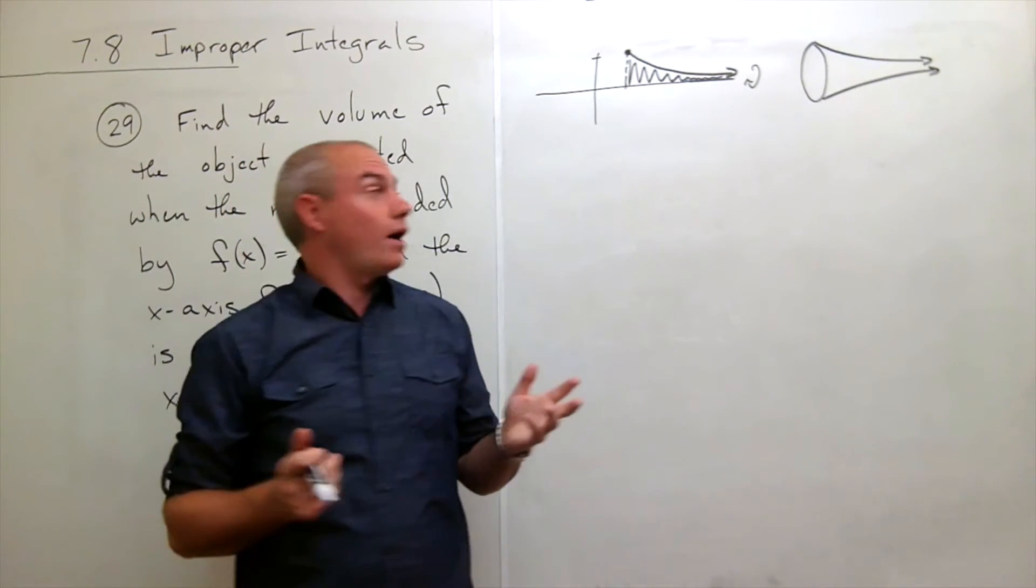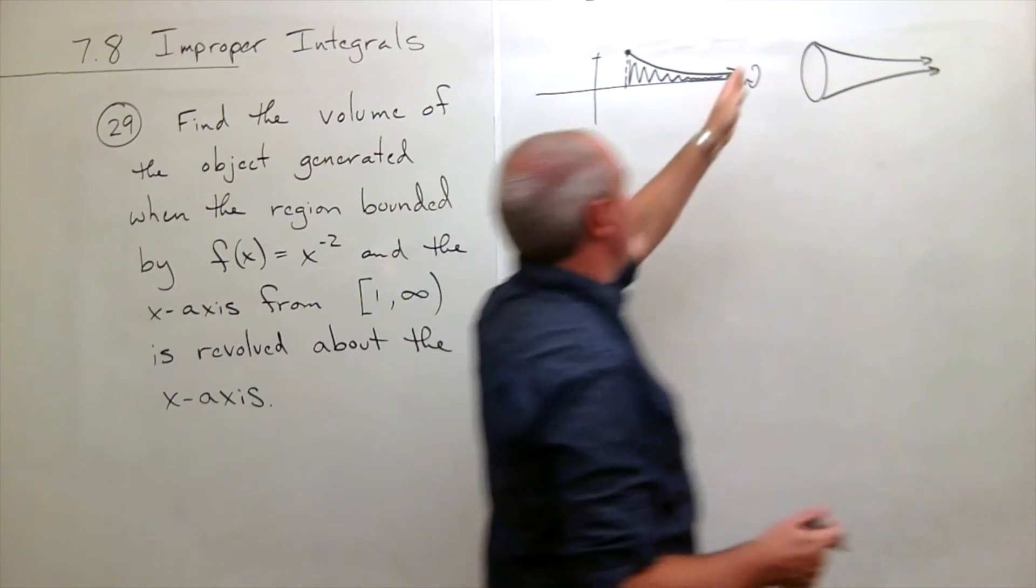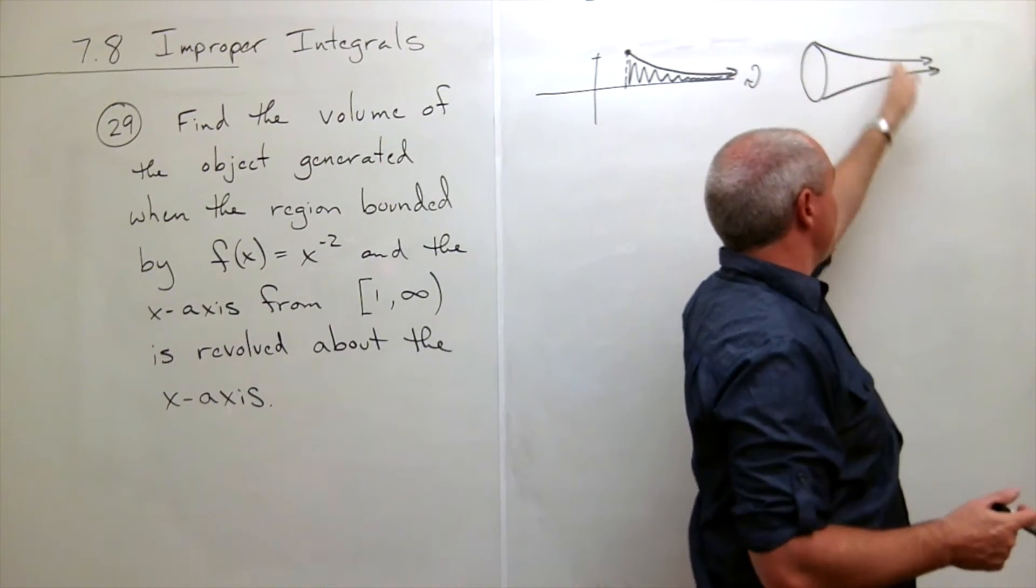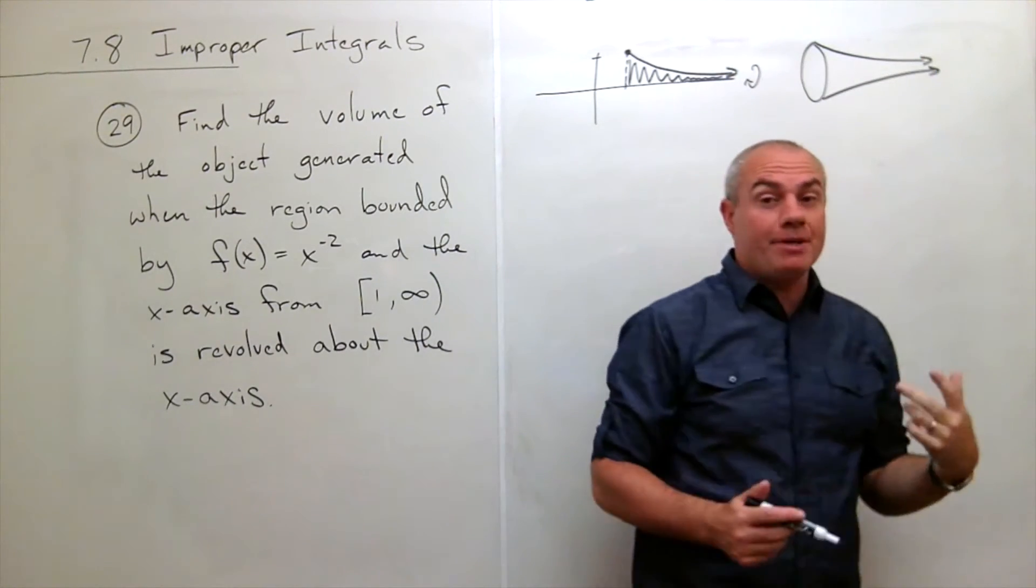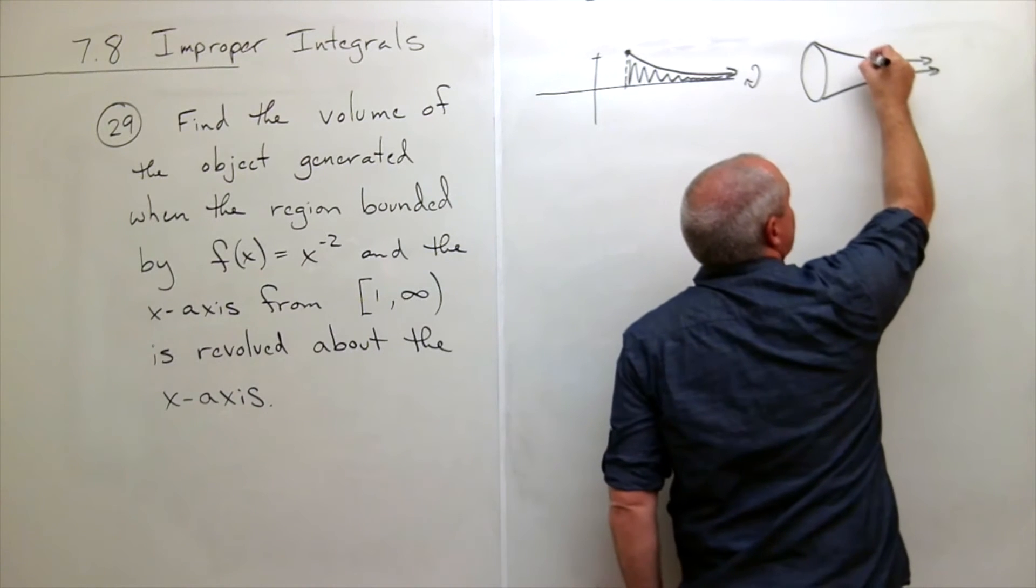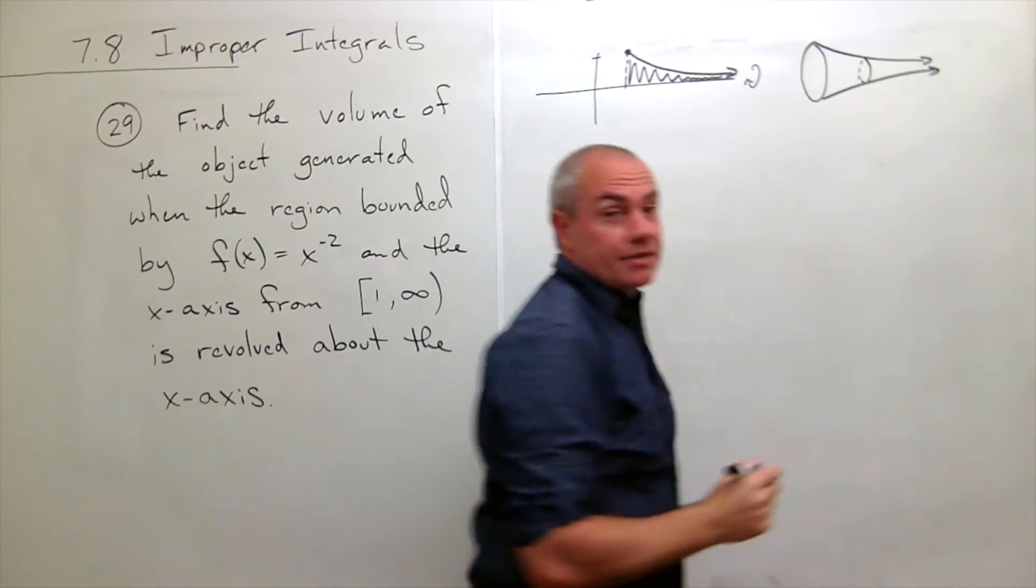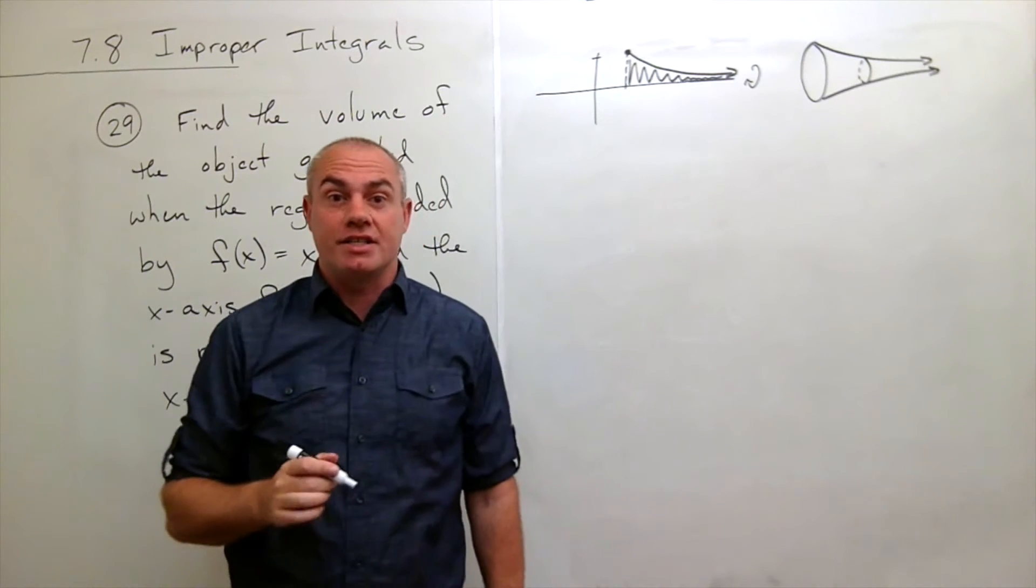Alright, so let's set up this integral. First of all, I can see if I chop this thing up into pieces, every piece that I would chop has the cross section of a disk. So I want to use the disk method.